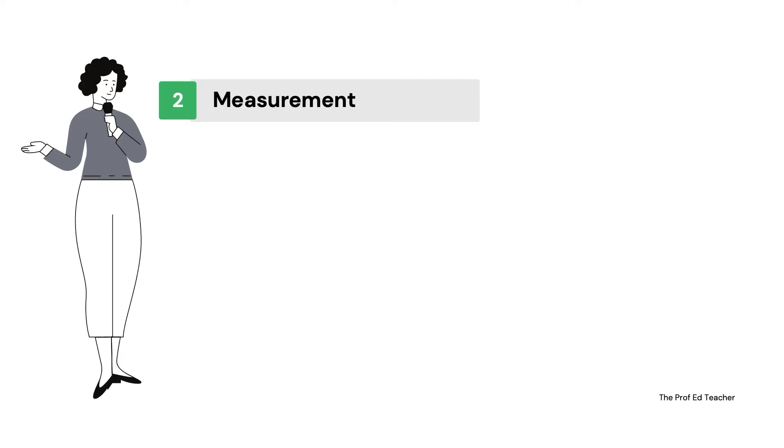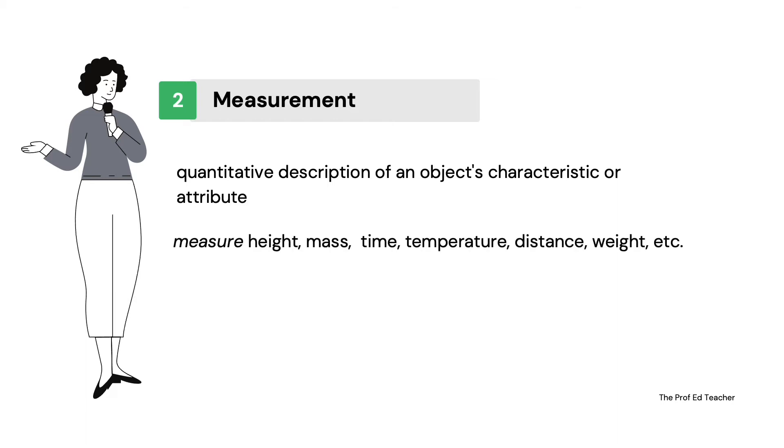So let us have now the measurement. Measurement is a quantitative description of an object's characteristic or attribute. In science, measurement is a comparison of an unknown quantity to a standard. There are appropriate measuring tools to gather numerical data on variables such as height, mass, time, temperature, among others.